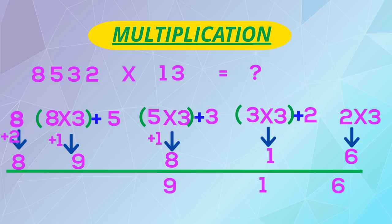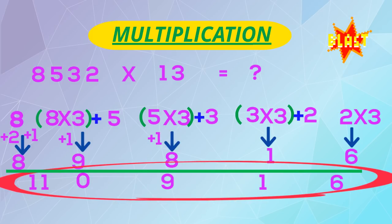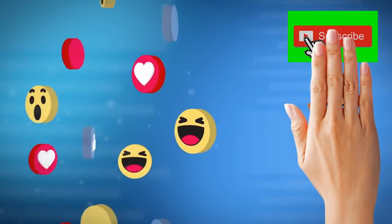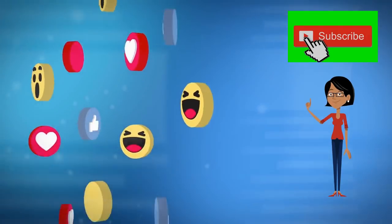Now we have to add the carry over numbers, so 6, 1, 8 plus 1 is 9, 9 plus 1 is 10, 0 comes down, 1 adds up with 8 plus 2 and becomes 11. Our answer: 110916.